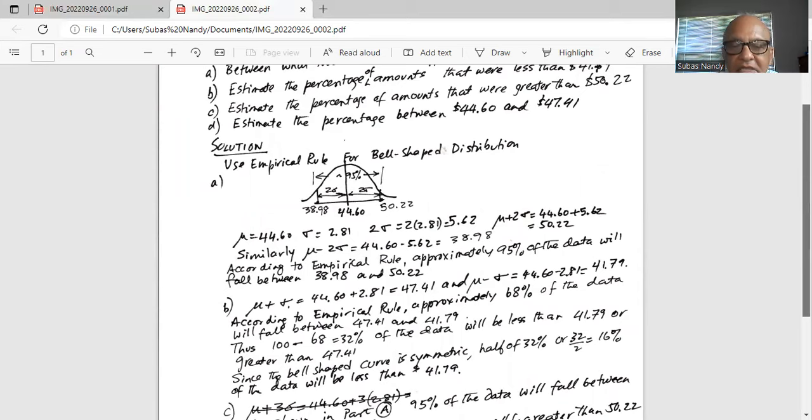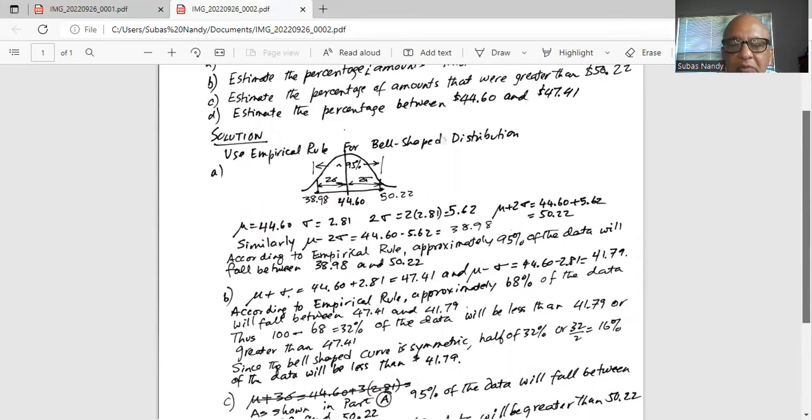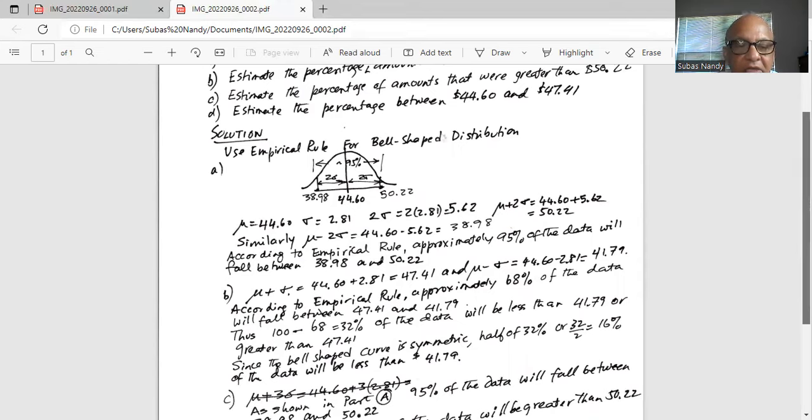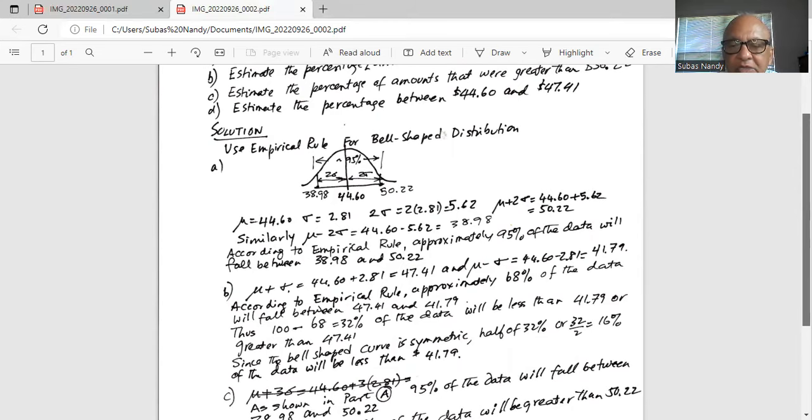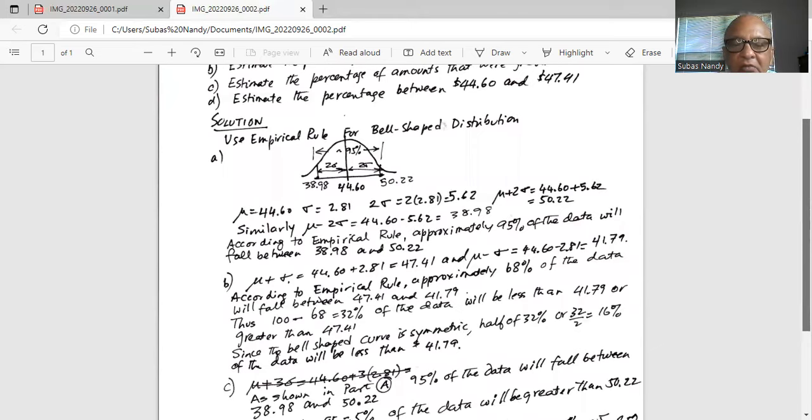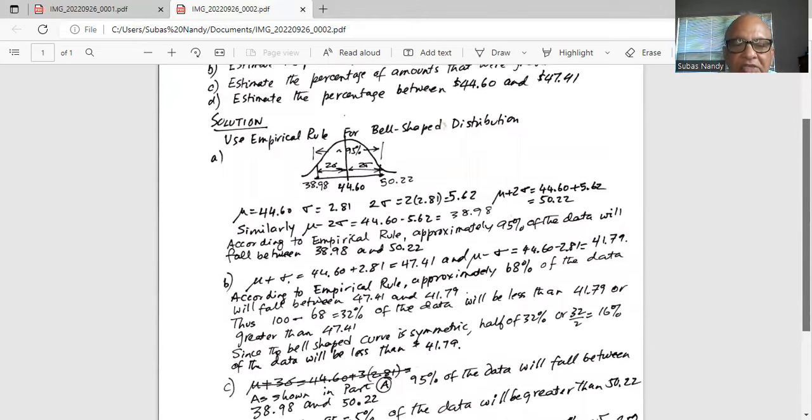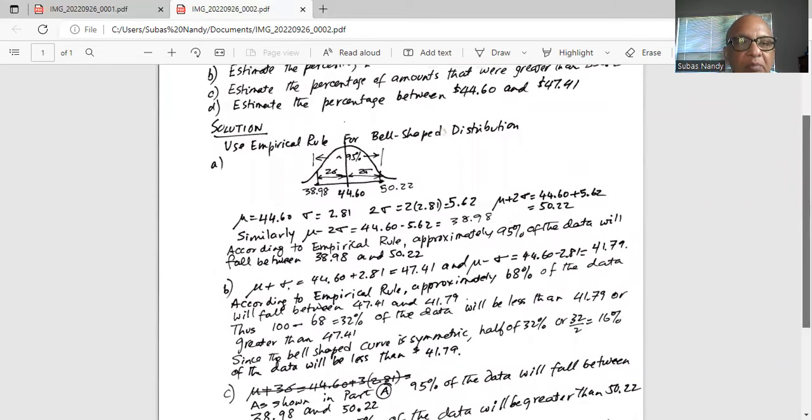Thus, 100 minus 68 is equal to 32% of the data will be less than 41.79 or greater than 47.41. Since the bell-shaped curve is symmetric, half of the 32% or 32 divided by 2 is 16% of the data will be less than 41.79. So that's the answer for part b.